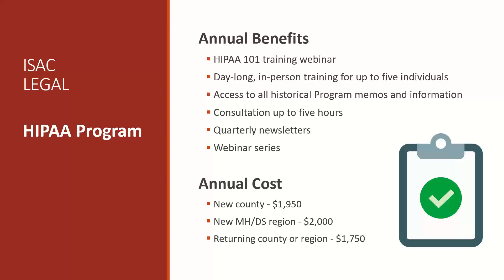All materials created by the program are saved on a password-protected website, so you always have access to past materials whether or not they were from a previous year. The program runs July through June. The yearly fee is $1,950 for a new county, $2,000 for a new region, or $1,750 for returning counties and regions. I'm constantly trying to improve the program, so if there's something you want or any ideas, please let me know.